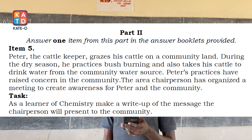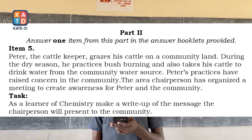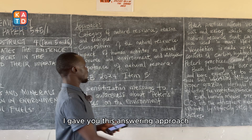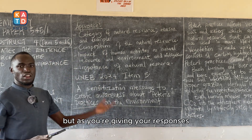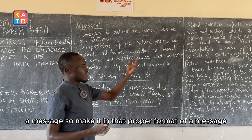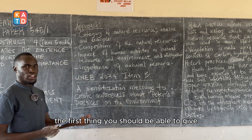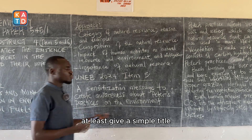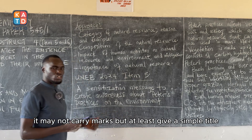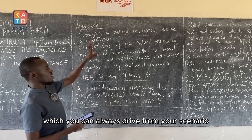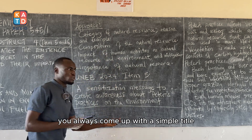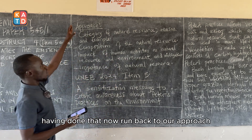As a chemistry learner, make a write-up of the message that the chairperson will present to the community. As you give your responses, understand that you are going to give a message, so make it in the proper format of a message. The first thing you should give is at least a simple title — it may not carry marks, but give a simple title, which you can always derive from your scenario and your task. Combine the two and you will come up with a simple title. Then run back to the answering approach.